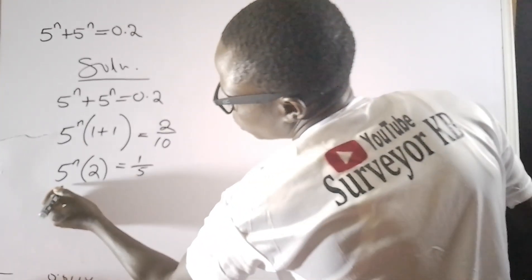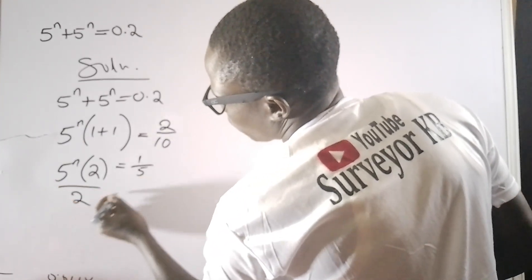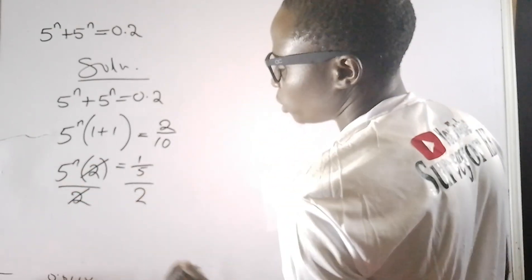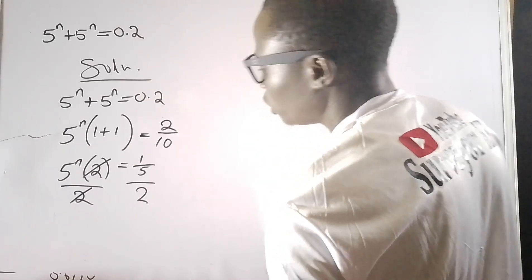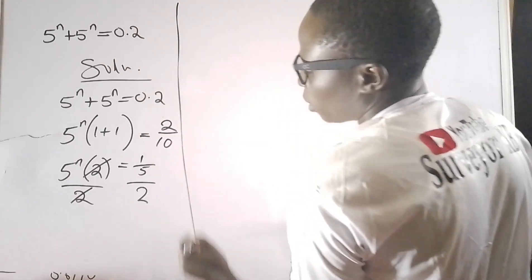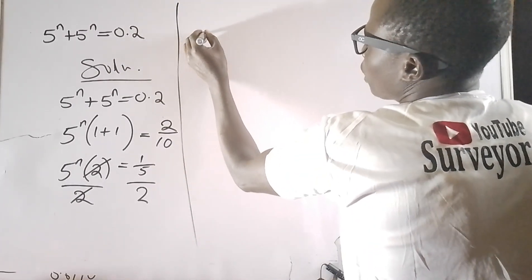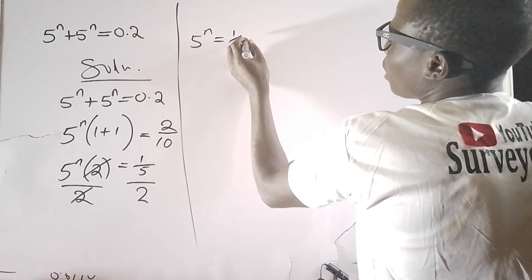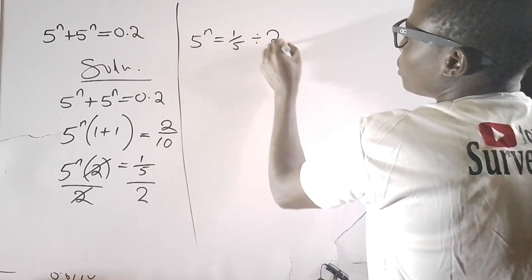I need to divide both sides by 2, so that these twos will cancel. I will be left with 5^n equals 1 over 5 divided by 2.